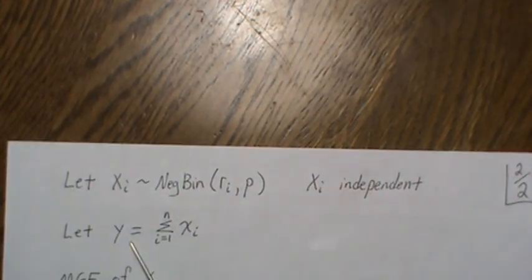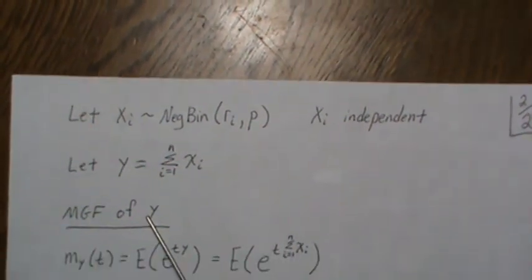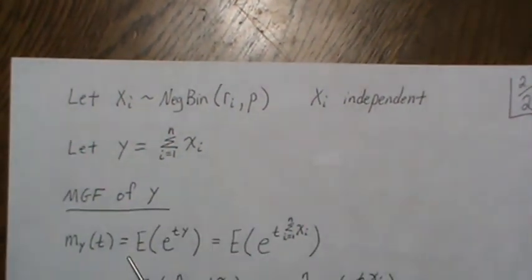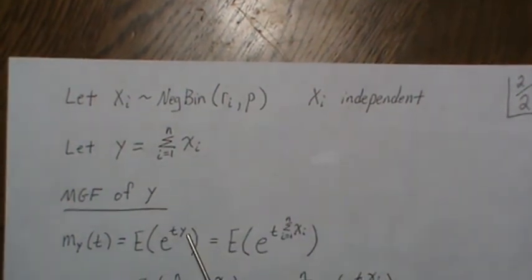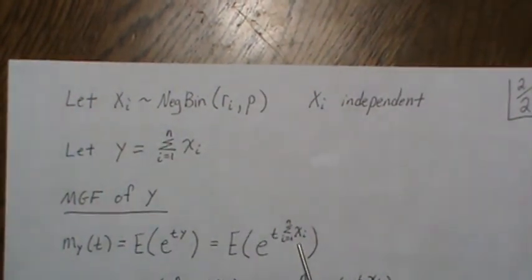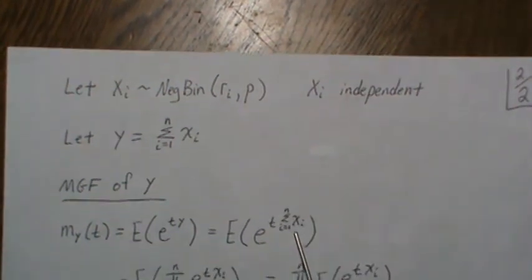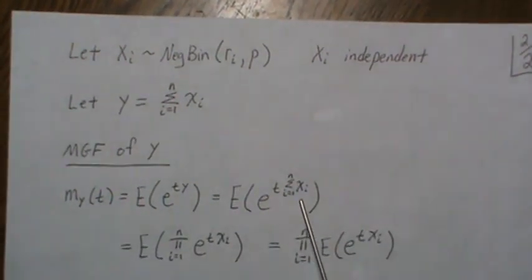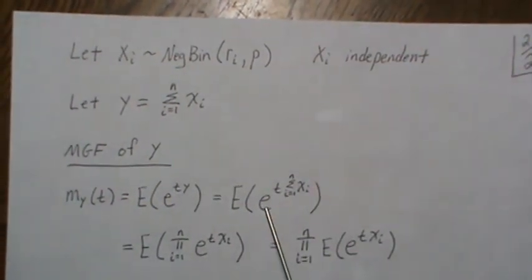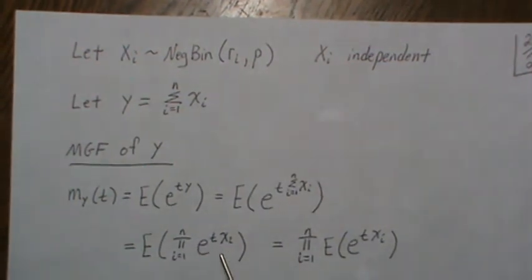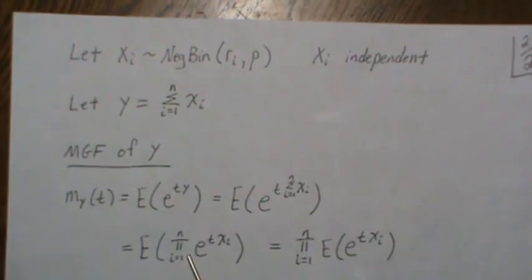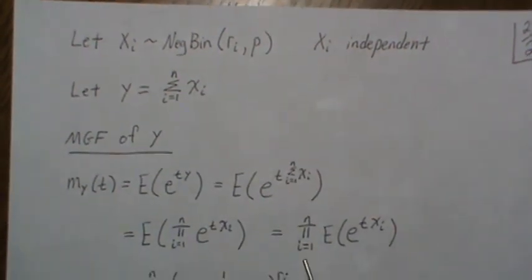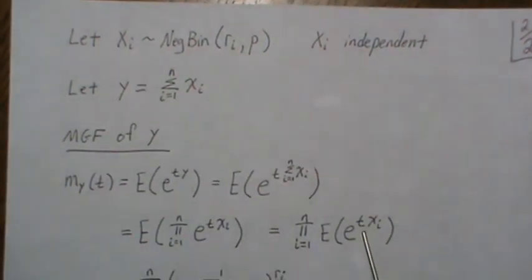So we're going to find the moment generating function for Y which is this. So it's the expected value of e^(tY) but then we can plug in what we know about Y is the sum of these XIs and when you have a sum in the exponent that's really like the product but each of these XIs are independent and so we can look at the expectations individually.